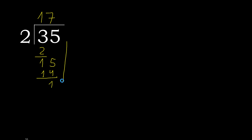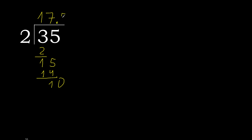That is not a whole number, therefore complete with 0 here with a decimal point. Complete the decimal point. That gives 10. 2 multiplied by 5 is 10, which is not greater. 10 minus 10 is 0, therefore finished.